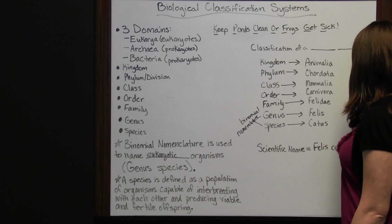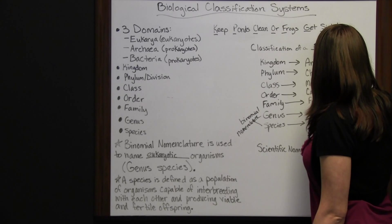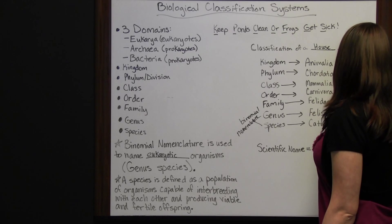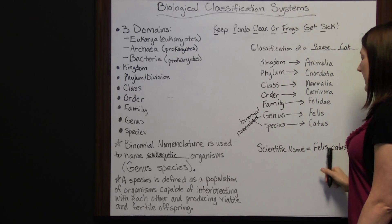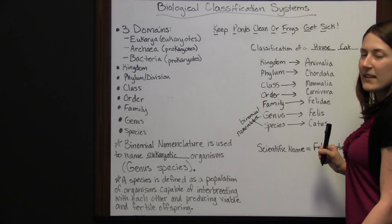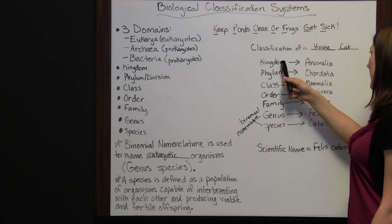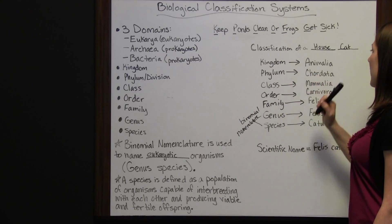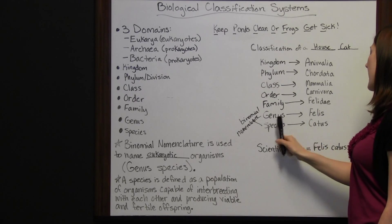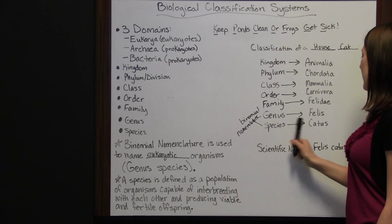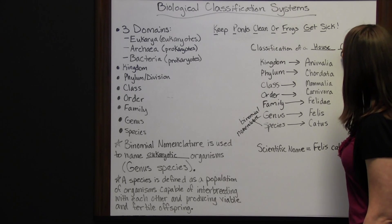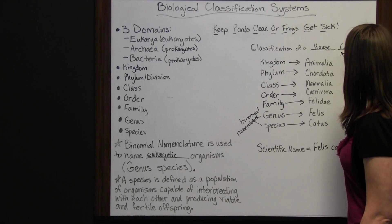If you guessed a house cat, you are correct. This was the classification of a house cat. Felis kind of sounds like feline, which you've probably heard before, and catus sounds like cat. A house cat belongs to Kingdom Animalia, Phylum Chordata, Class Mammalia, Order Carnivora, Family Felidae, Genus Felis, and Species catus — giving it the scientific name Felis catus and the common name house cat.